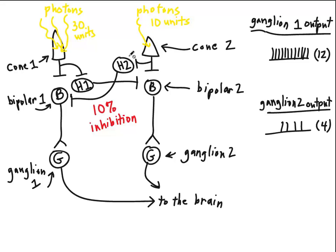Likewise, horizontal cell number 2 is generating 10 units of inhibition for each unit of disinhibition that it receives. So if we work the math, here's what we can see.